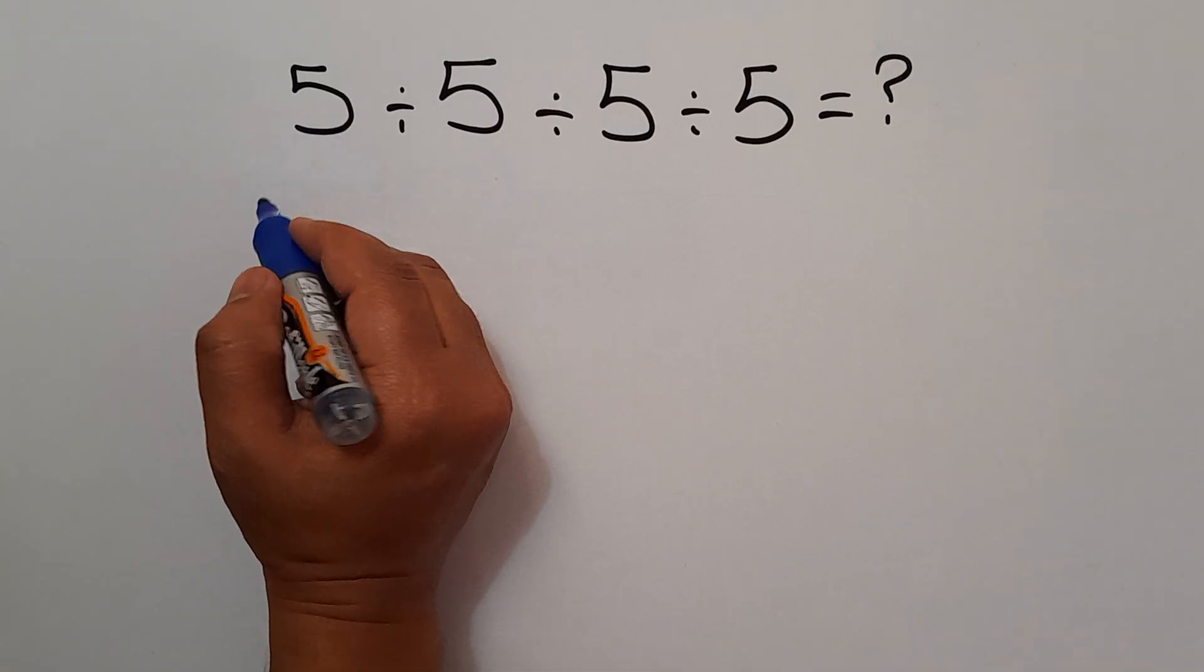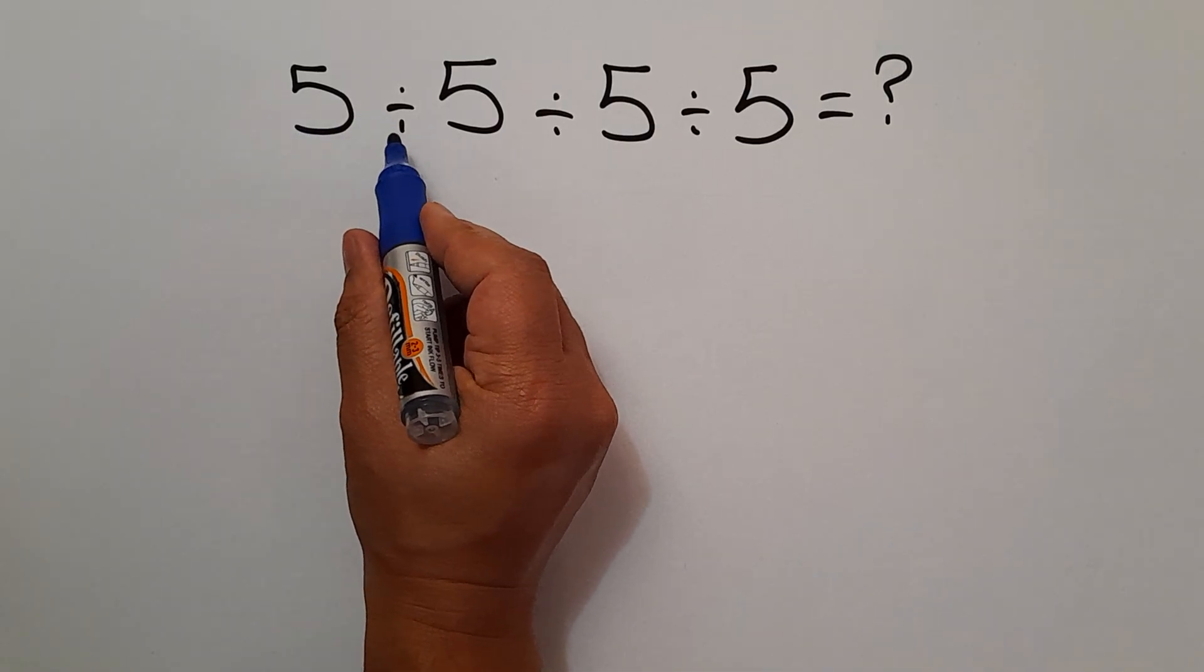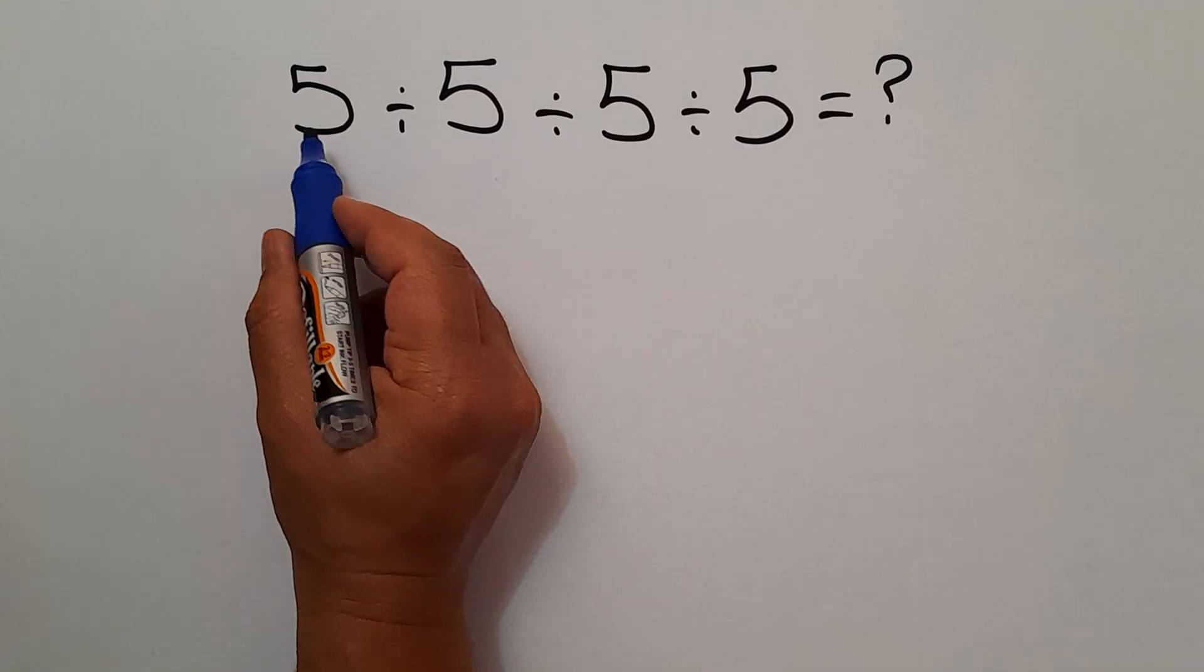When we have more than one operation in one expression, we have to work from left to right.